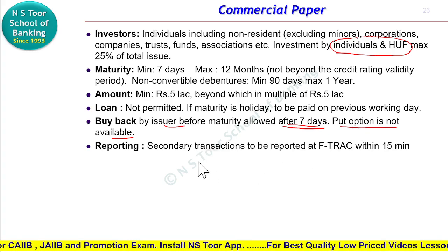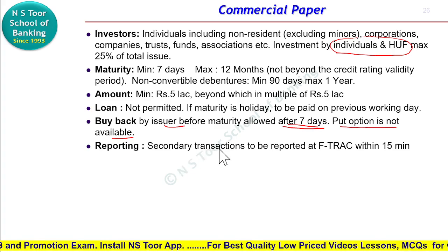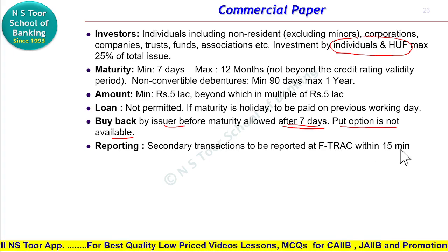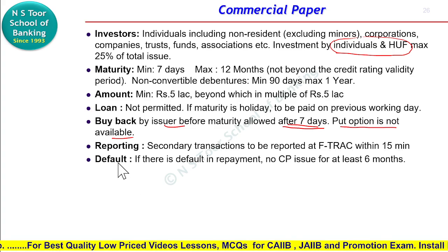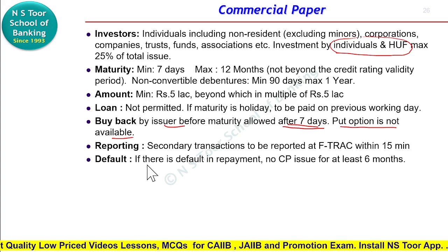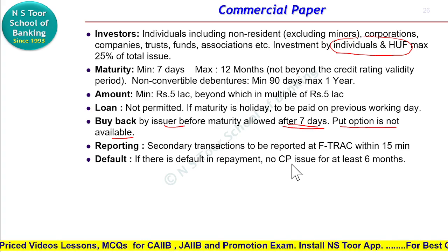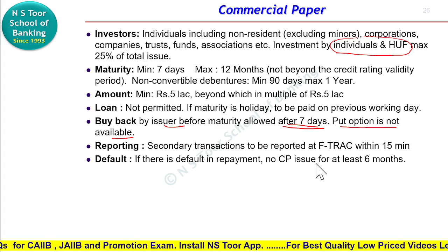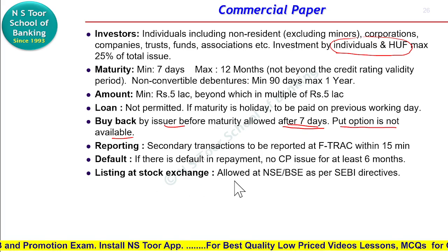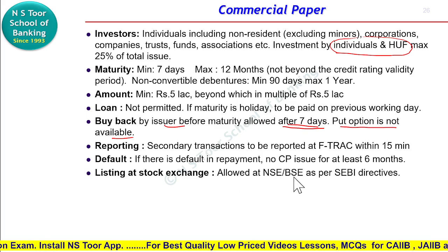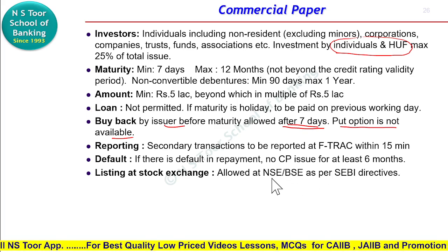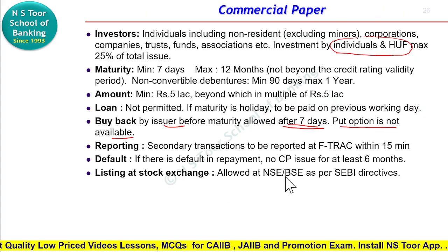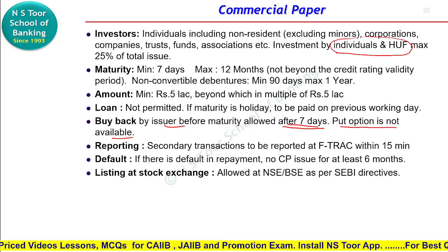Reporting of transactions — jitni bhi secondary transactions ki jayengi is instrument mein unko report karna hoga F-TRAC ke upar, aur uska period 15 minutes ka hai. Agar default hota hai — agar koi issuer repayment mein default karta hai — to wo next 6 months ke liye koi CP issue nahi kar sakti. Aur inki listing stock exchange ke upar possible hai, so NSE ho ya BSE, SEBI ke directives ko follow karna hai and listing is very much possible. Ye raha hamara commercial paper. Thank you friends and all the very best.